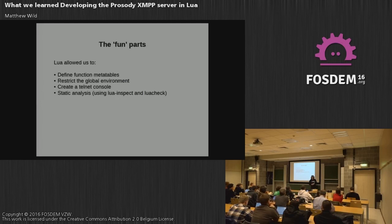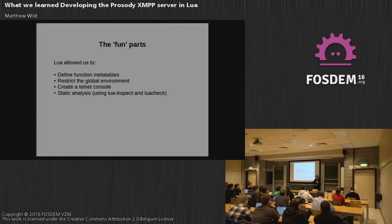Using Lua gave us some features that not all languages have so readily available. We define a metatable for all functions, and that means when you call tostring on a function it tells you where it was defined instead of giving you some obscure address — really great for debugging. We also allow indexing the function so you can look up values inside a closure and use it just like a table, which is also great for debugging, and occasionally for monkey-patching and hacks of all sorts.